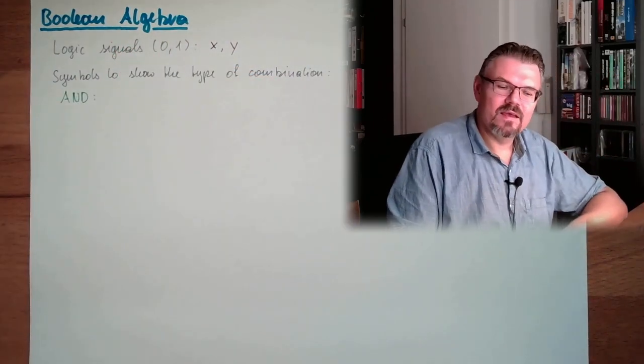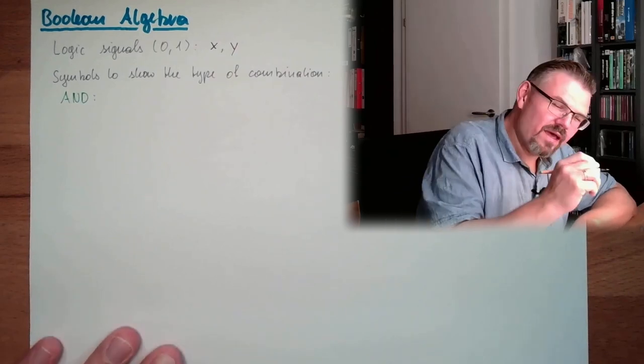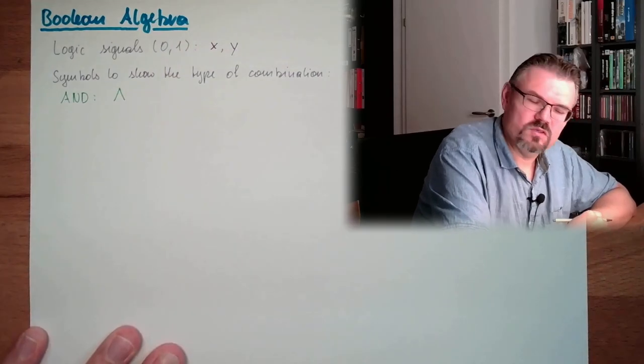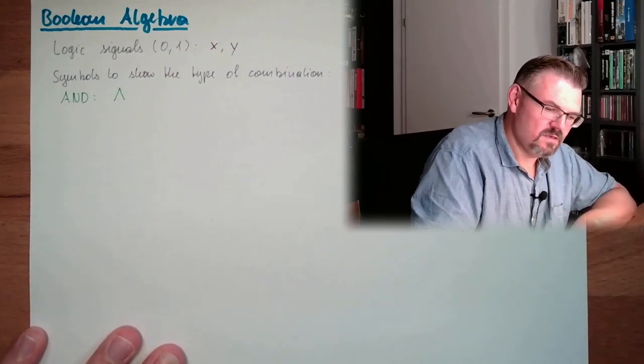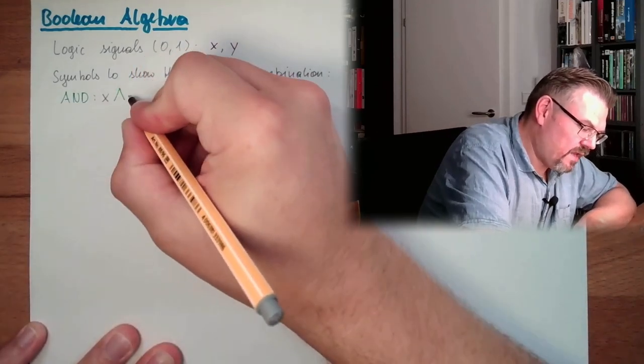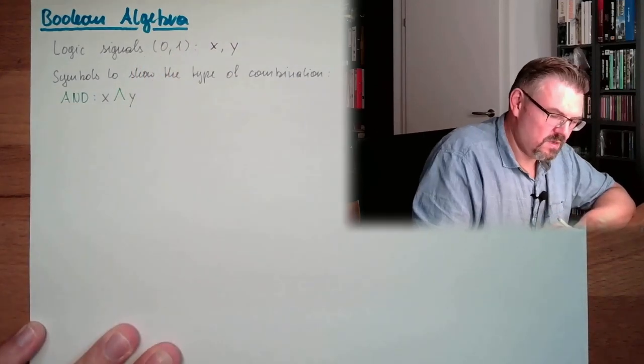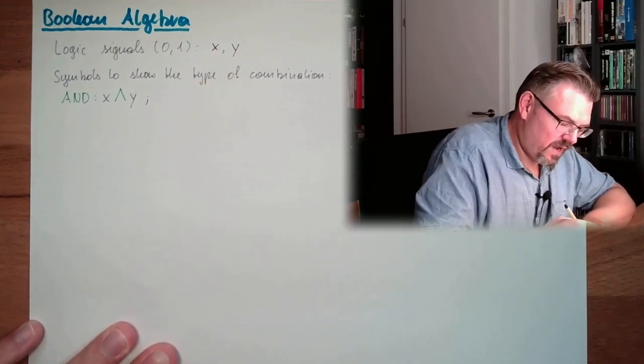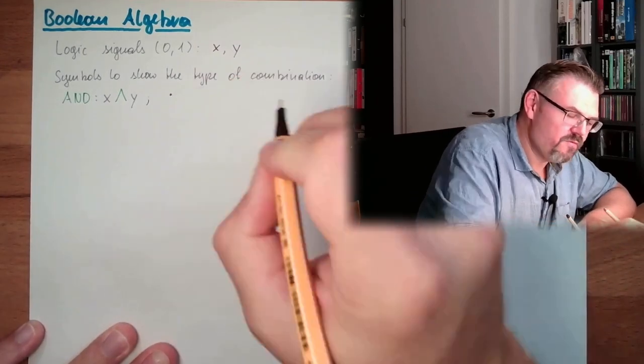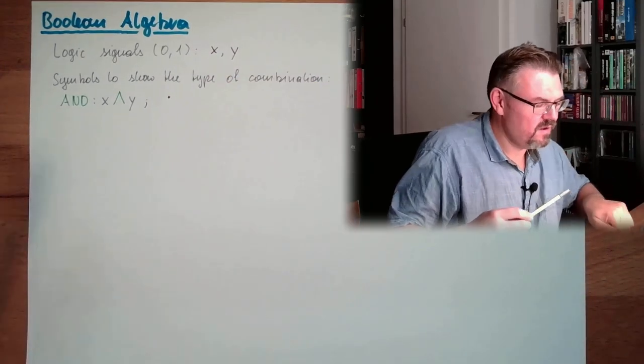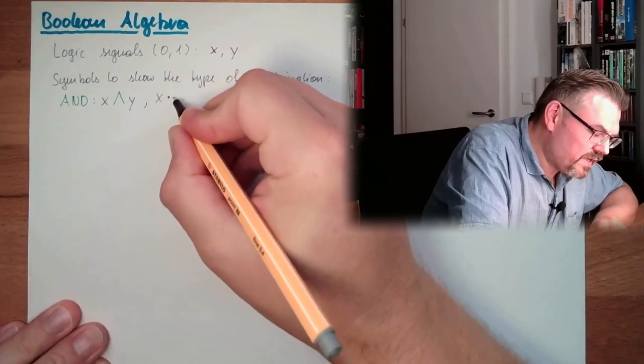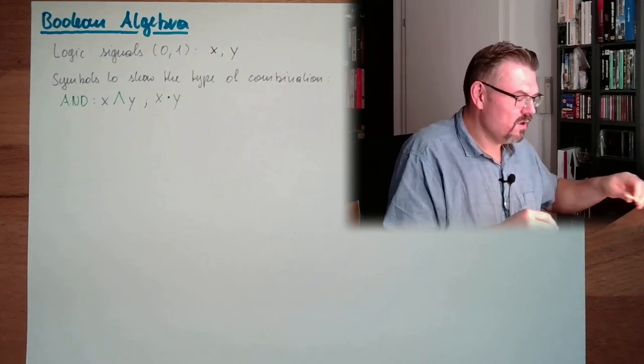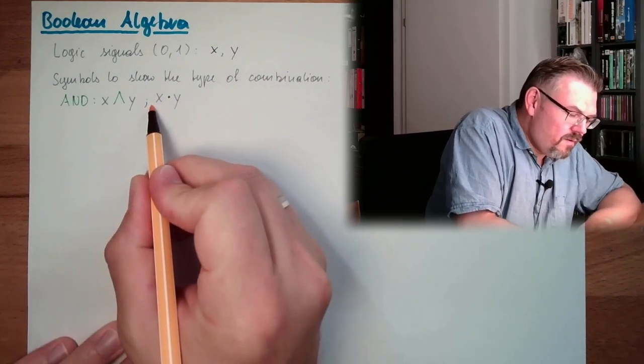And AND, a very usual symbol is this. For instance, x and y. However, I am preferring a different type of symbol. I am preferring a dot. I have used this in a previous video already. So AND for me, it looks like a multiplication x and y. This is the one I am preferring. This is the one we are going to use.